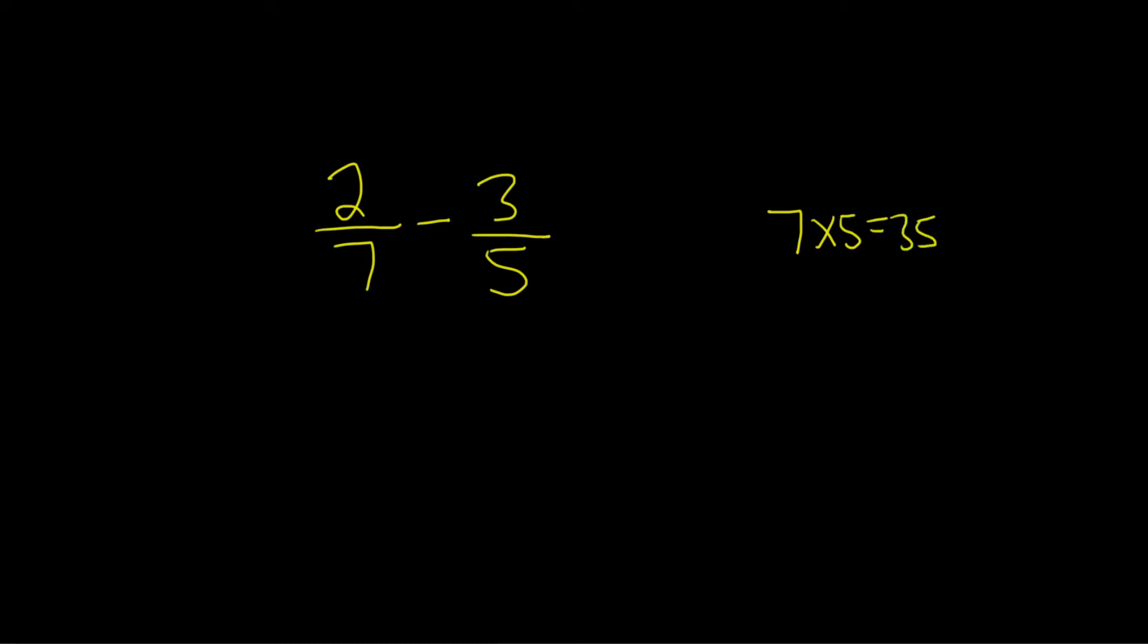So now what we do is multiply each fraction by something in order to make the bottom equal to 35. So here we're missing a 5, so we multiply by what's missing. So 5 over 5, then we put it times.